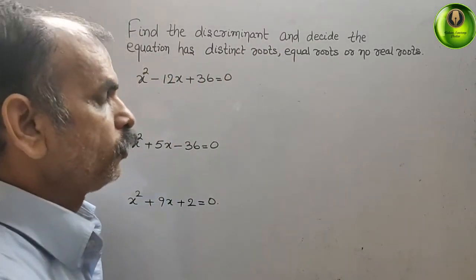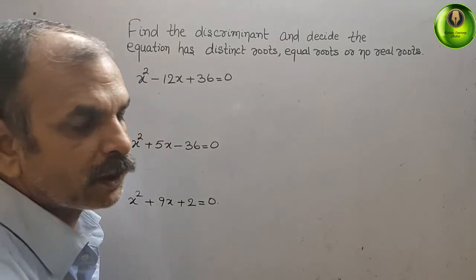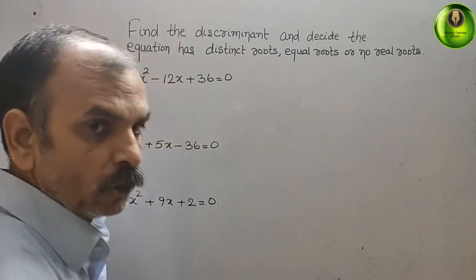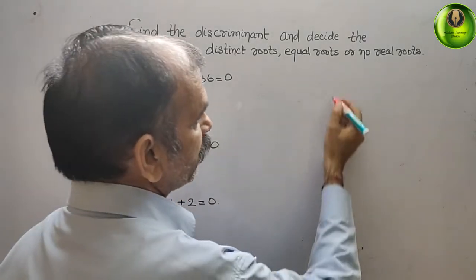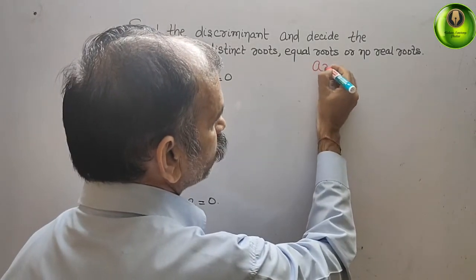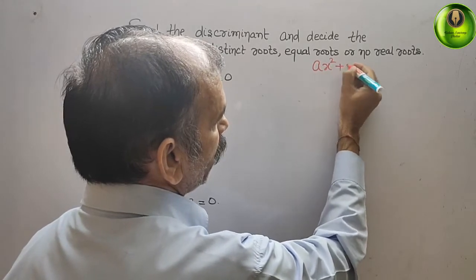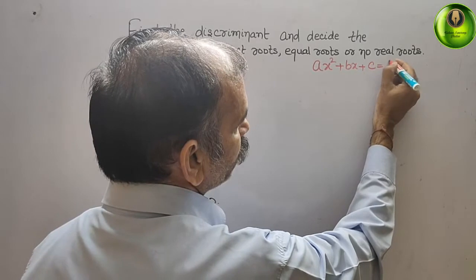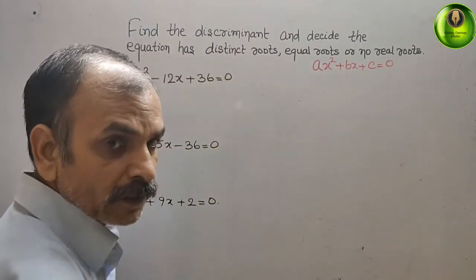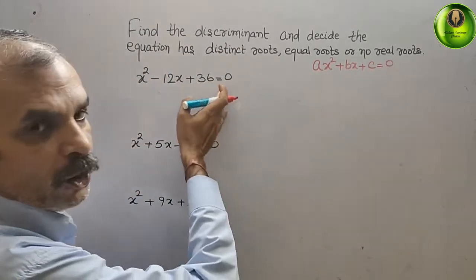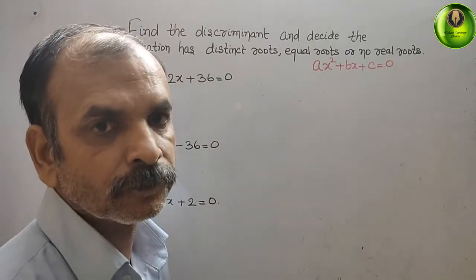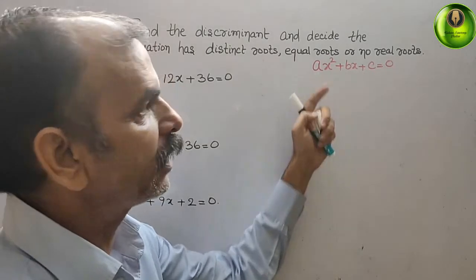Now, what we have to do here, first thing, we have to make them in the standard form. So, standard form is what? That is your ax square plus bx plus c that gives you 0 here. That means every term should be on your left side except 0. That is your standard form.